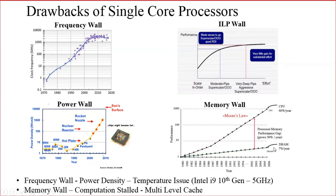When the processor is getting faster and the CPU tries to get data from memory at the same speed, memory will not be able to supply the data at the processor's speed. That is why we use L1 cache, L2 cache, and L3 caches. Even with cache memory in place, memory cannot supply data to the CPU operating at much higher speed. The computation on the pipeline stages gets stalled — this is known as the memory wall.